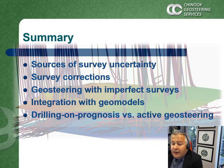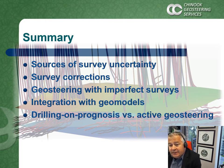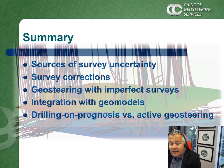We will look at the sources of uncertainty and error in directional surveys. We will look for procedures to correct errors and reduce uncertainty. We will have a quick look at the software-based geosteering approach and how to deal with imperfect surveys. Then we'll walk the two-way road between geomodel and geosteering interpretation and examine advantages of active reservoir navigation compared to drilling on prognosis.